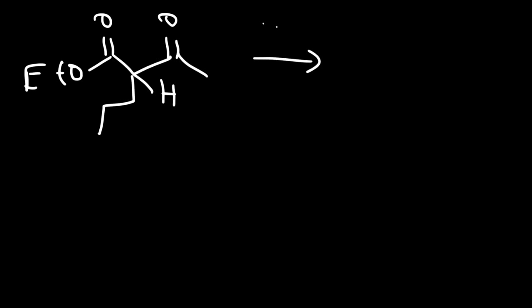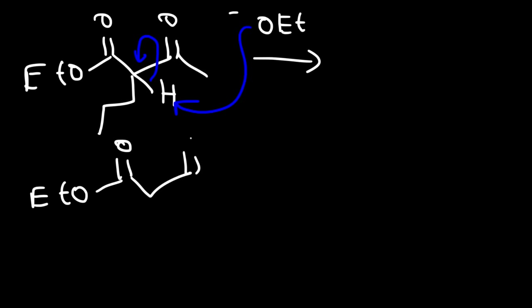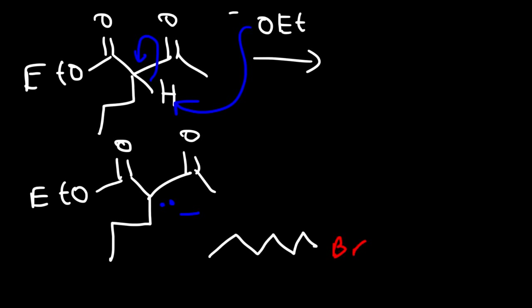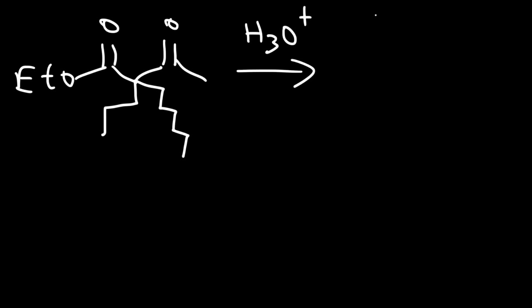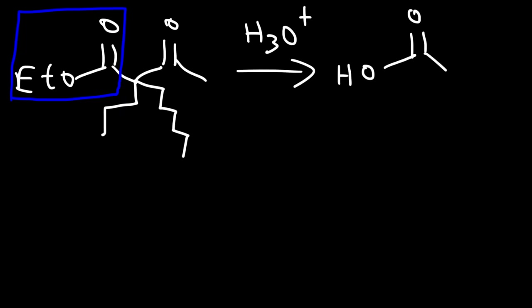We need to add three carbon atoms. Then there's a second alpha hydrogen that needs to be removed, so we use ethoxide again to take it off. Now we can add the second R group — the carbon with the negative charge is going to react with hexyl bromide. So we've added a propyl group and a hexyl group.